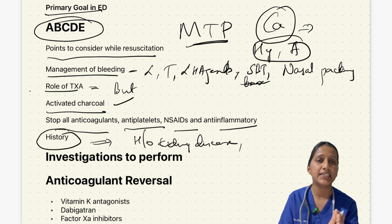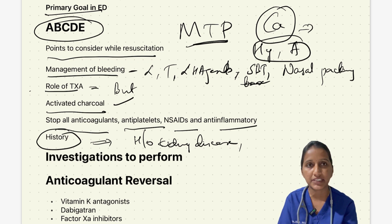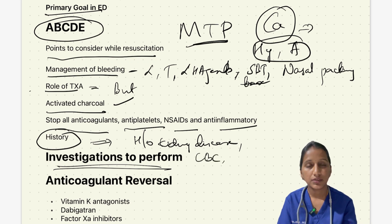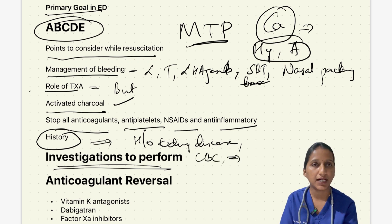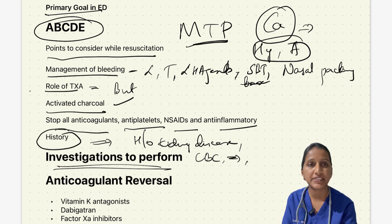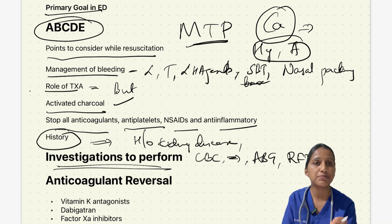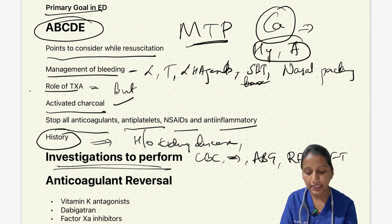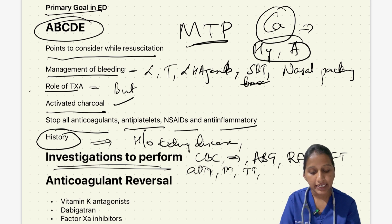Initial investigations in the emergency room include: complete blood count for hemoglobin, PCV, and platelet count; blood gas for base deficit and lactates to guide resuscitation; renal function tests; and liver function tests. Coagulation tests depend on the anticoagulant. If the anticoagulant is unknown, perform APTT, PT, TT, and anti-factor Xa.